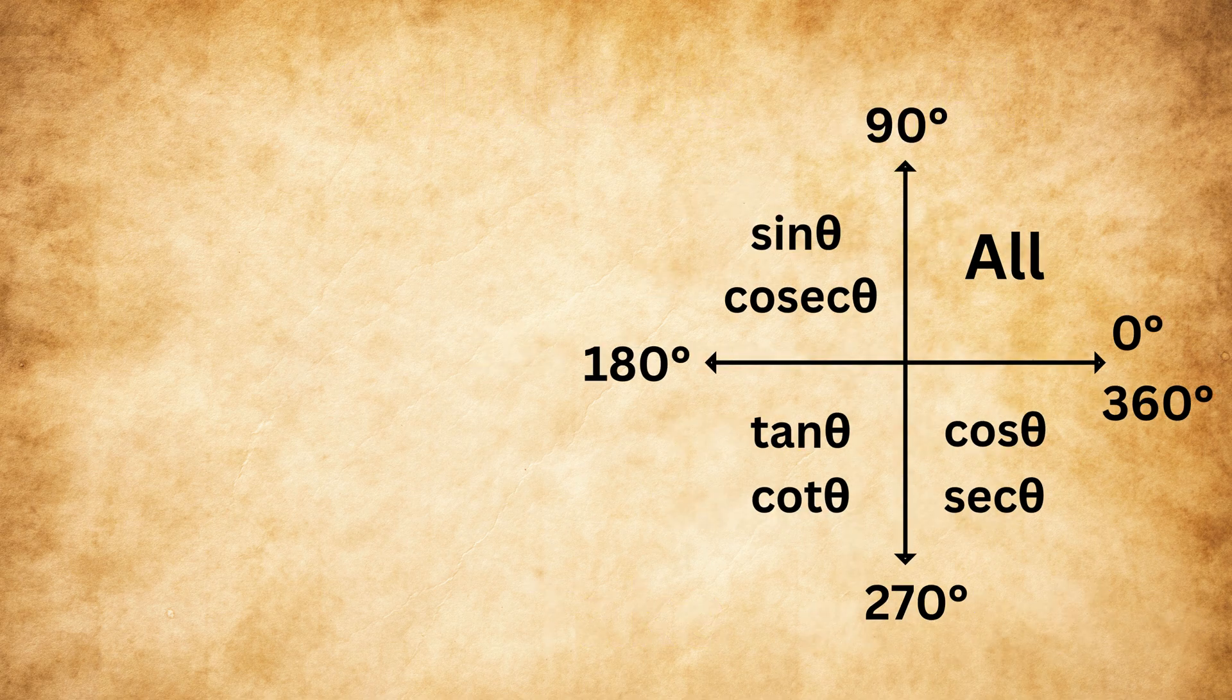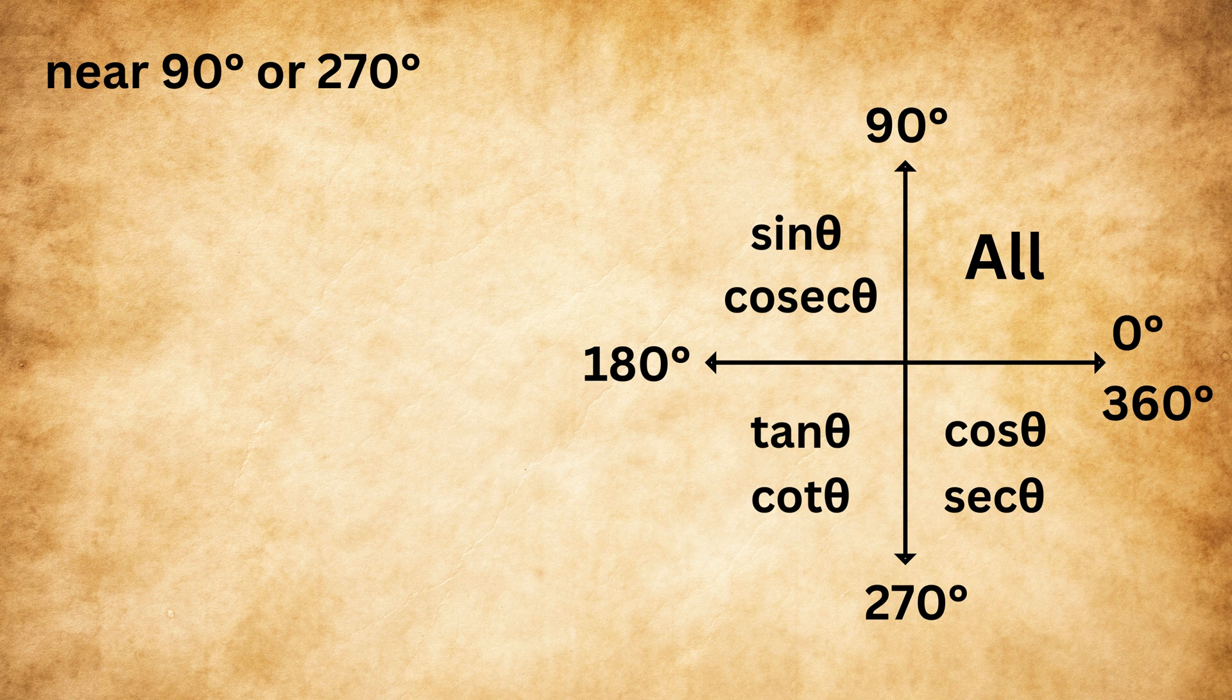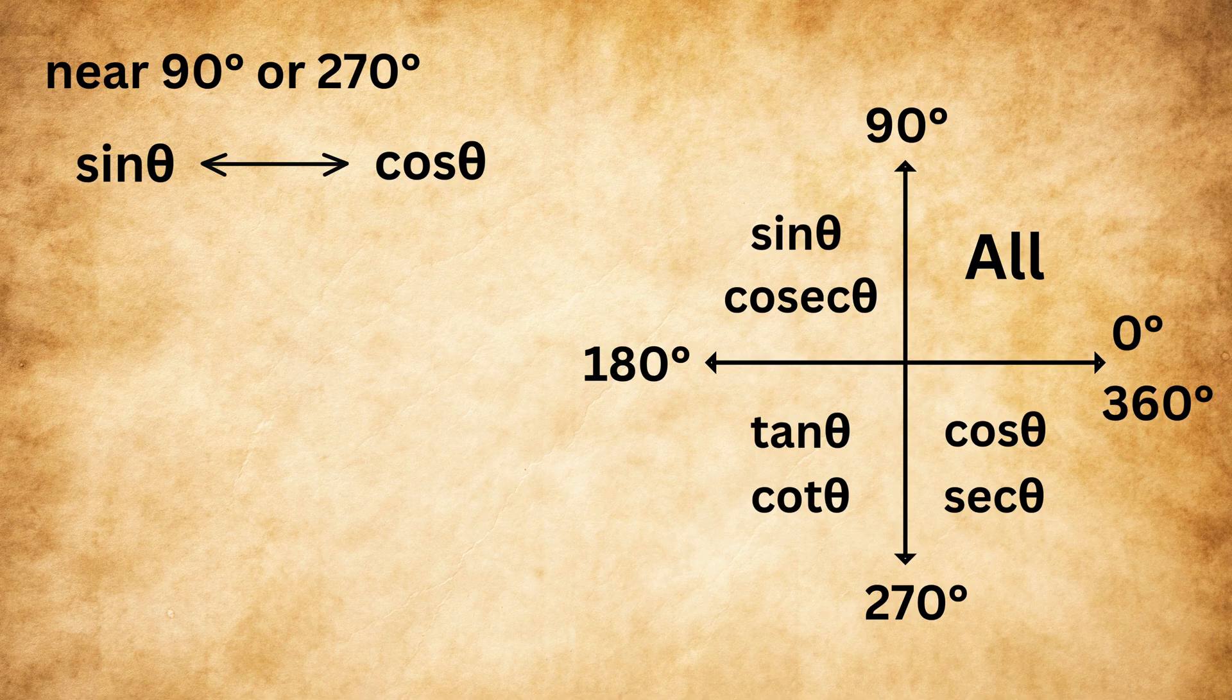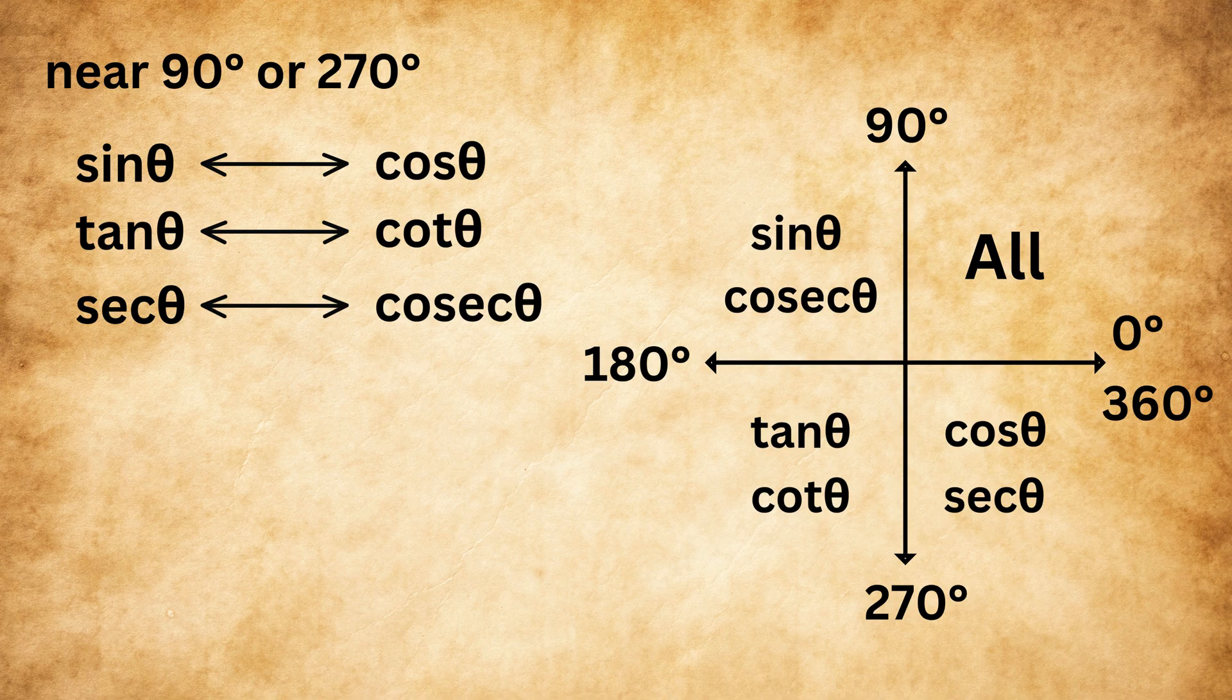Now, one more small rule to remember. When our angle is near 90 degrees or 270 degrees, then the trigonometric ratio changes its form. Sine changes to cosine, and cosine changes to sine. Then tan changes to cot, and cot changes to tan. Similarly, sec changes to cosec, and vice versa.